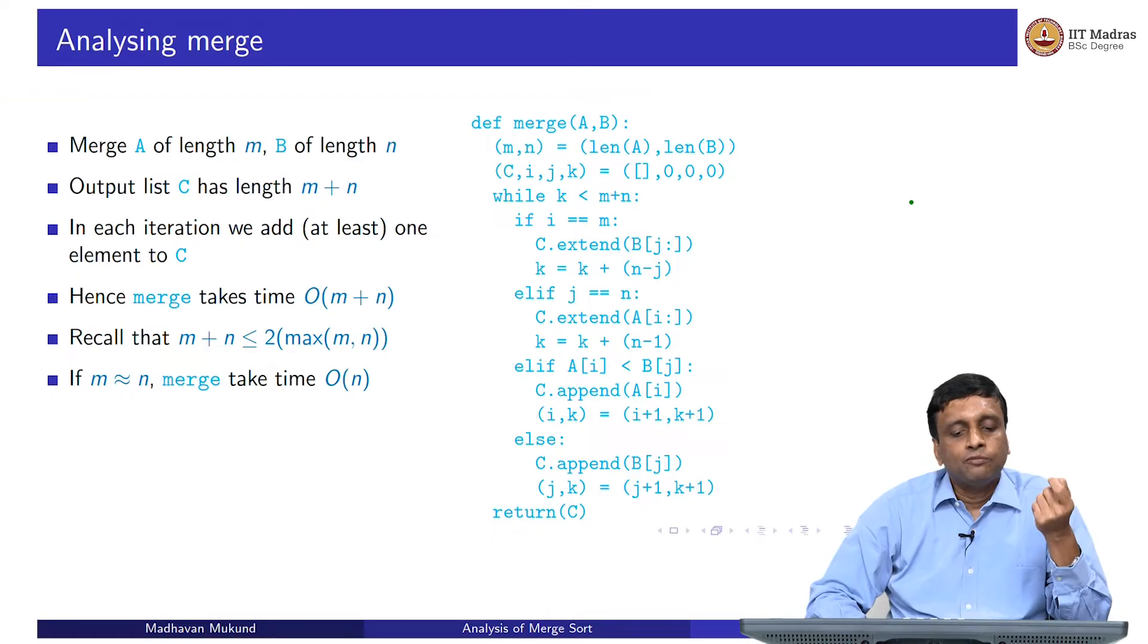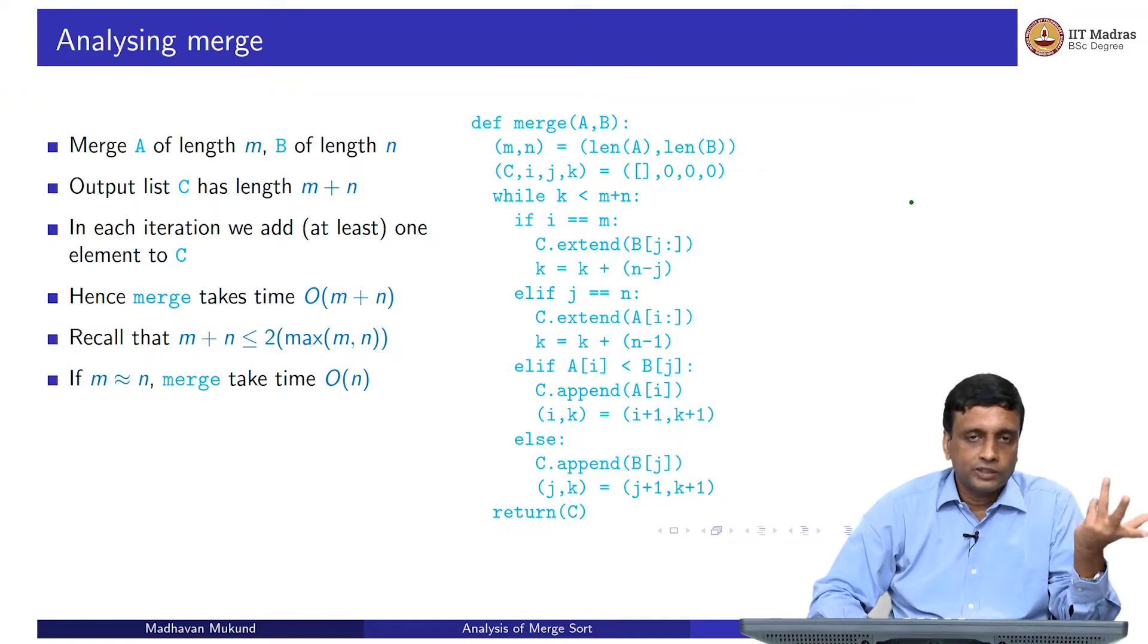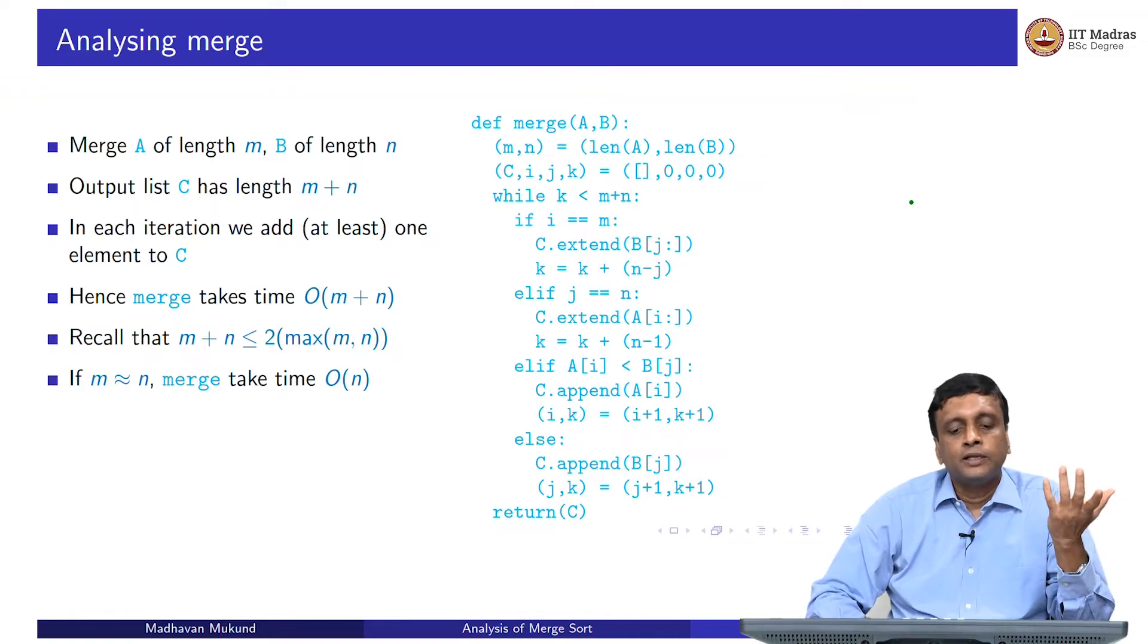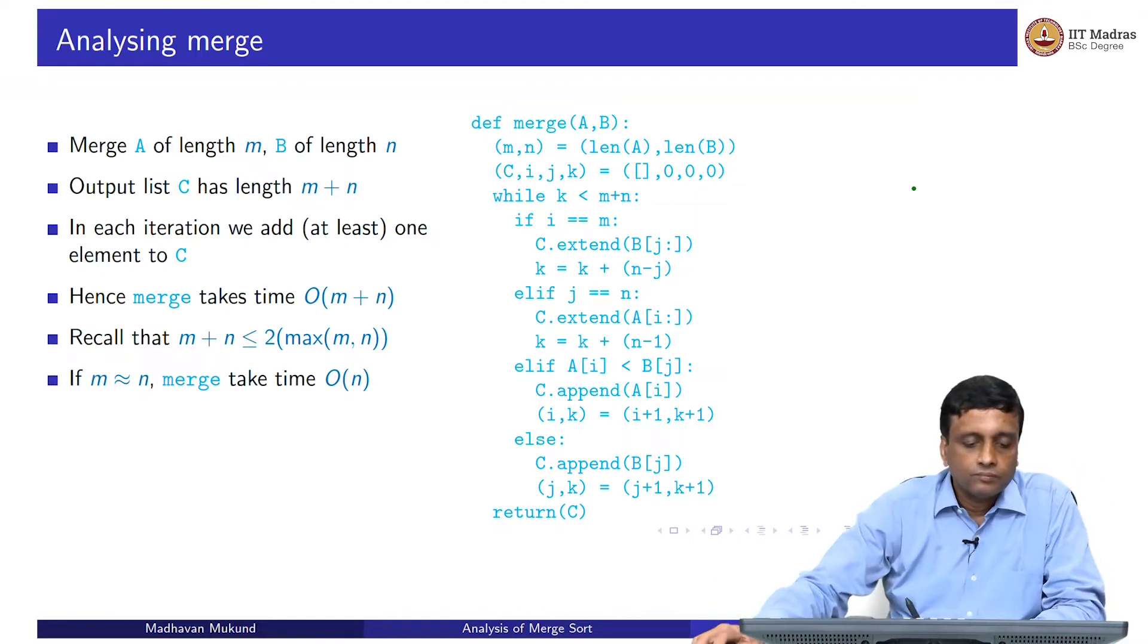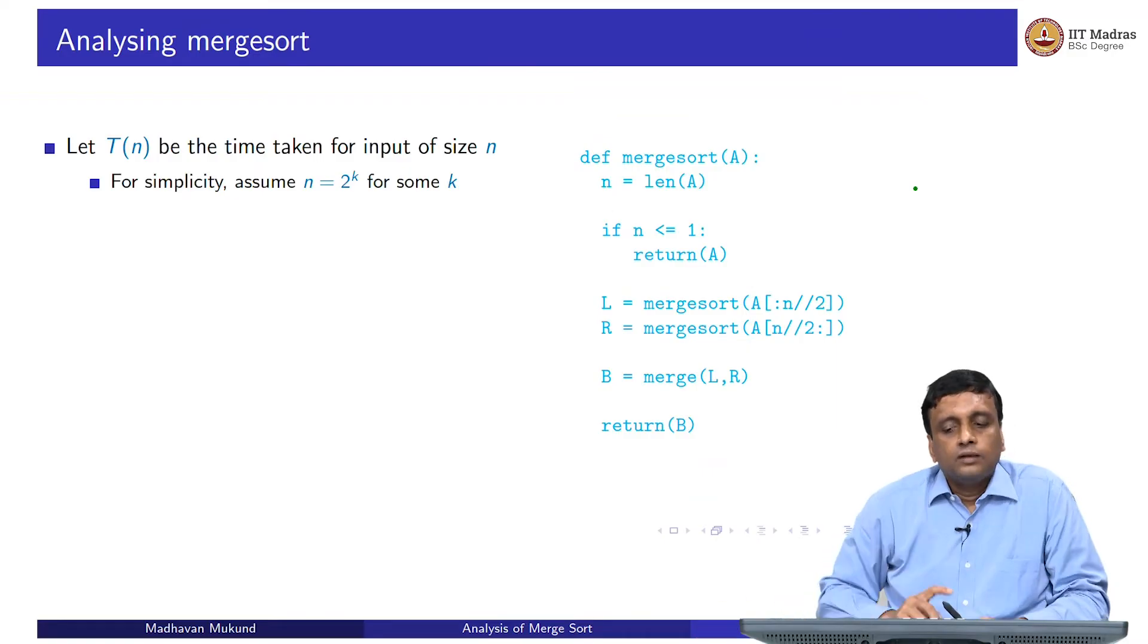We had seen this when we did asymptotic complexity - we said f1 plus f2 will be 2 times the maximum of g1, g2. So m plus n will be 2 times the maximum, but the maximum of m and n, when m and n are almost the same, is just n or m, whichever, because they are almost the same. So merge will take essentially time order n, which makes sense.